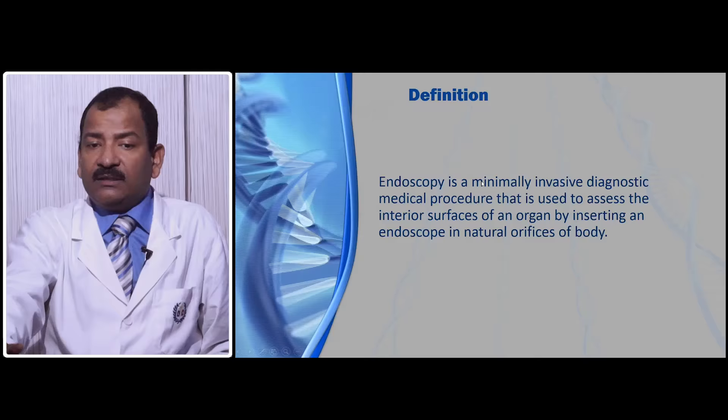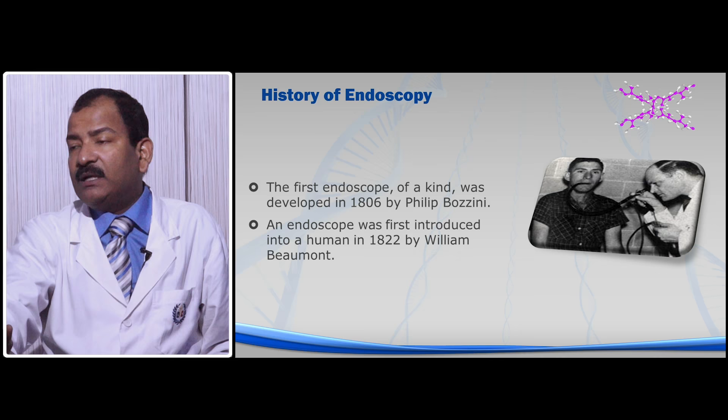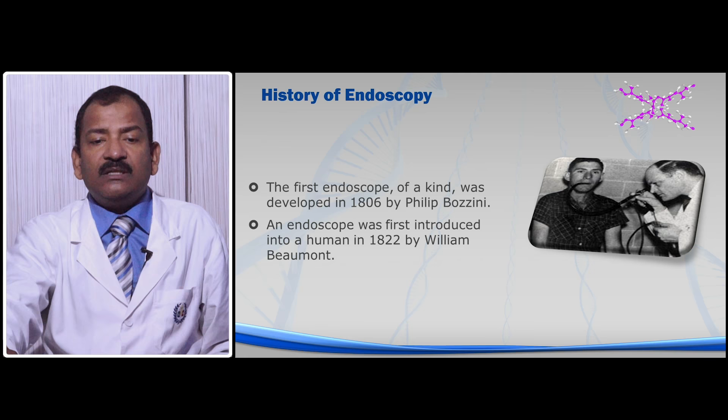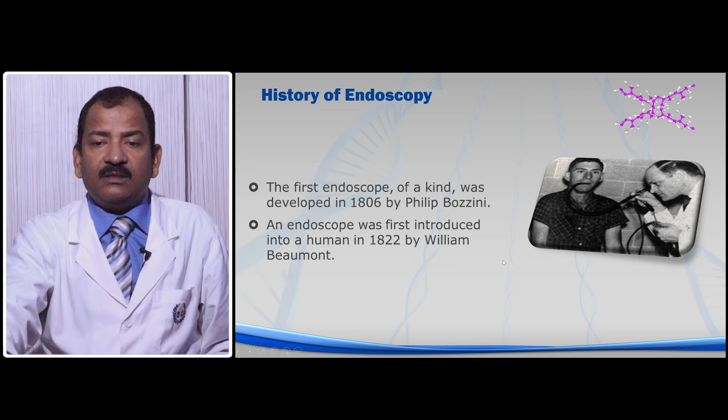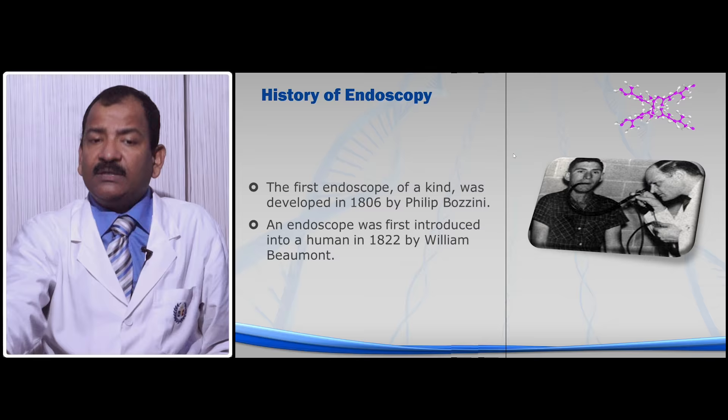The history is very interesting. It was first invented in 1806 by Philip Borgini. At that time there was only a fiber optic endoscope and they used it just to see the esophagus. It was first used in a human in 1822 by William Beaumont, and this is the original photograph where he is seeing the upper esophagus, the cervical esophagus. At that time it was a very crude technique.